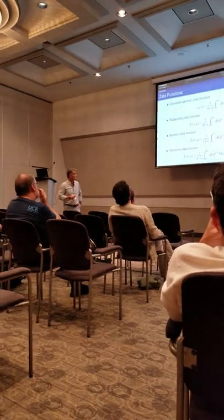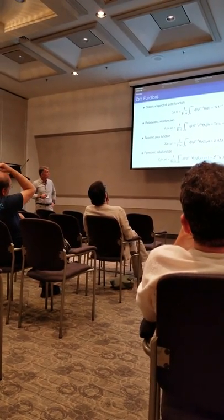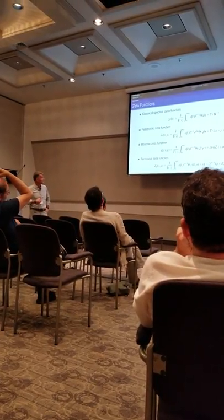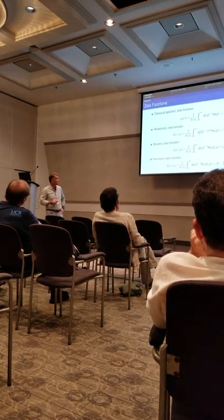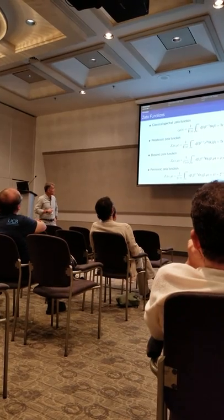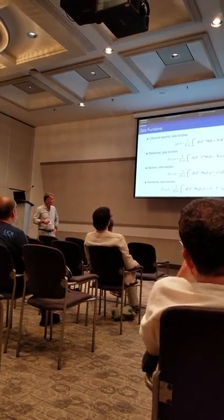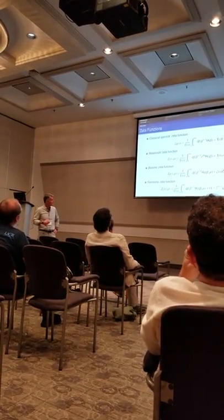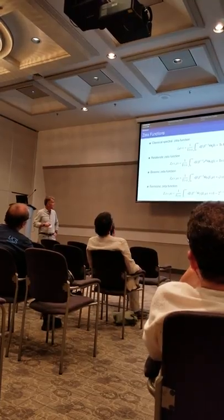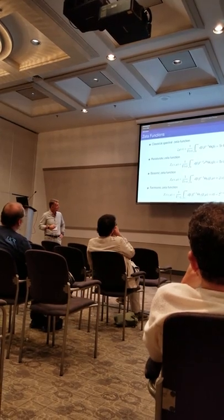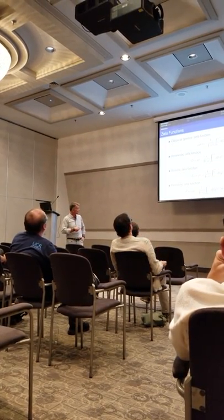This is about spectral zeta functions — classical zeta functions. In analogy with these, I define a relativistic zeta function and bosonic and fermionic quantum zeta functions. We show that both quantum zeta functions can be expressed in terms of the relativistic zeta function, where zeta is the Riemann zeta function. In other words, both bosonic and fermionic zeta functions are expressed in terms of the relativistic zeta function of the pseudodifferential operator omega. One then defines these objects and studies their analytic properties as complex functions of the complex variable s.